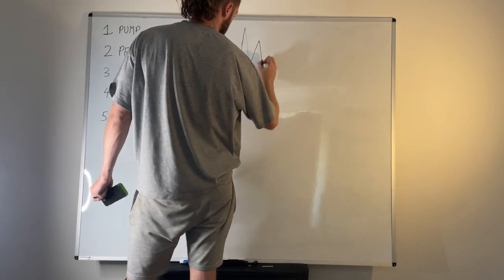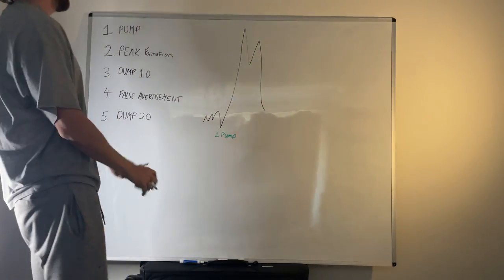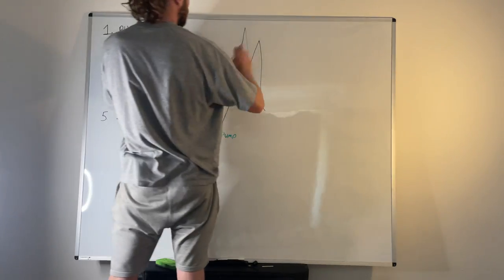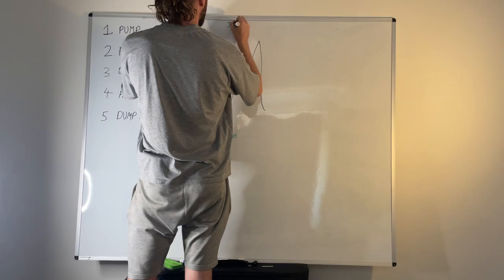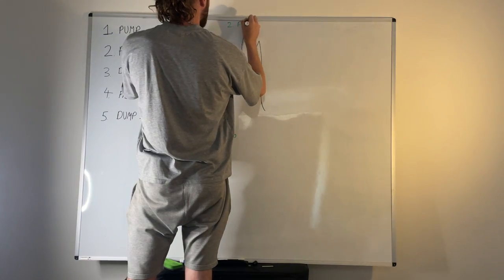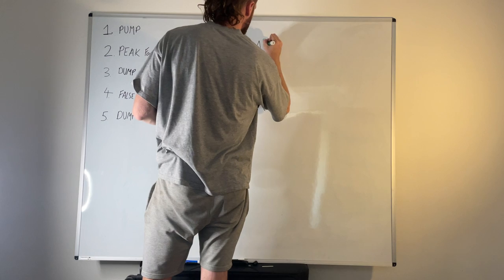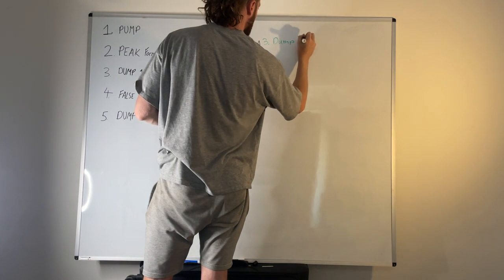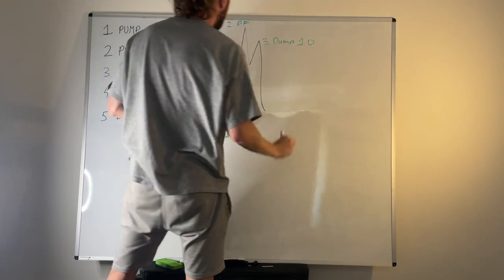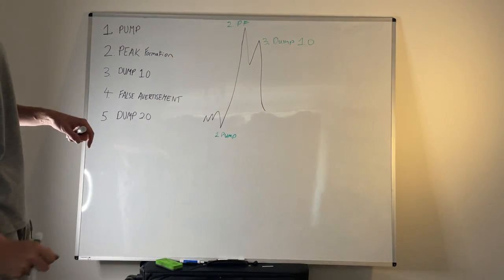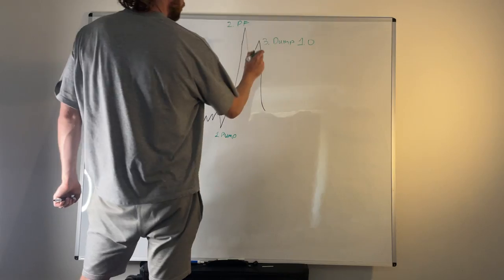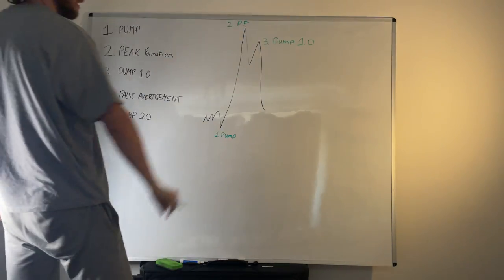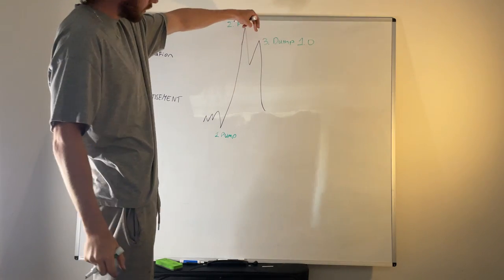Trapped volume, peak formation in place. Then we get the dump, initial dump, the dump 1.0. After we've put in the peak formation, this initial dump. Me personally, I was trying to focus on trading this initial dump, so after we've put in the peak formation, this initial dump.